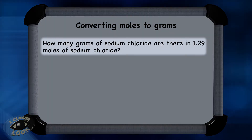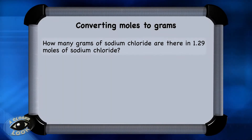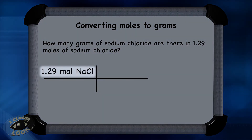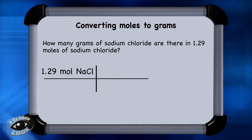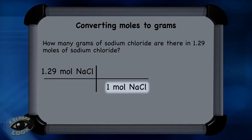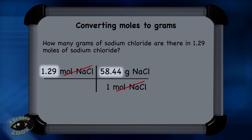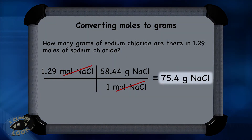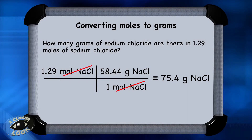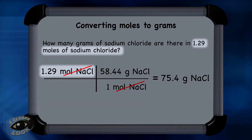This next problem asks how many grams of sodium chloride are there in 1.29 moles of sodium chloride? Just as before, you take what's given — this time the given information is about a compound, sodium chloride. Set up a conversion chart and bring down the units, moles of sodium chloride. You're trying to go from moles of sodium chloride to grams, so use the molar mass of sodium chloride as discussed earlier. The units from moles of sodium chloride cancel, and all that's left is to multiply 1.29 times 58.44. The answer is 75.4 grams of sodium chloride.